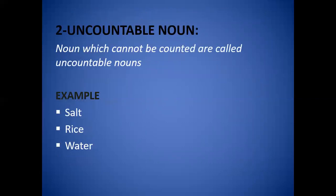Now come to uncountable nouns. Nouns which cannot be counted are called uncountable nouns. For example: salt, rice, water. Ham salt, rice, ya water se pehle numbers nahi laga sakte. Ham ye nahi keh sakte one salt, ya two salt, ya three rice, ya four water. Ya ham inko plural bhi nahi bana sakte — salts, rices, or waters bhi incorrect hai. To ham inhe count nahi kar sakte, ham inhe individually separate nahi kar sakte. So these are called uncountable nouns.